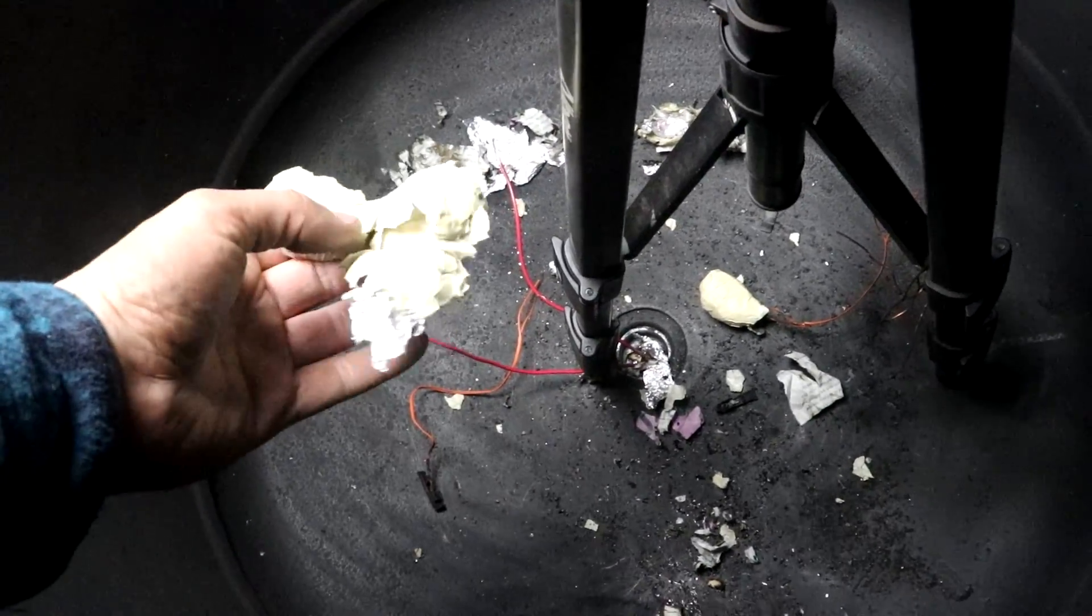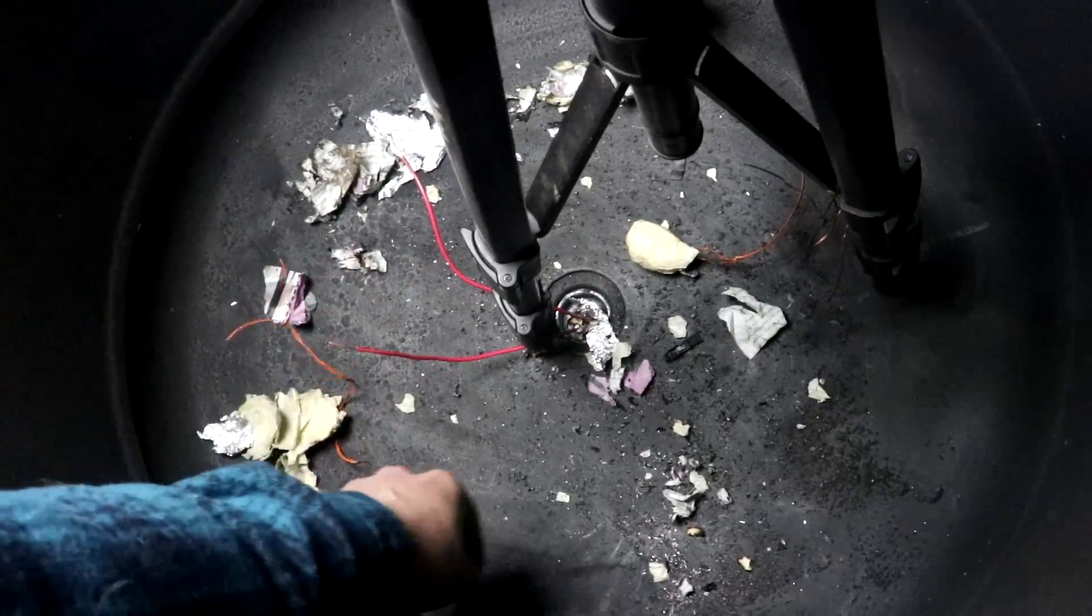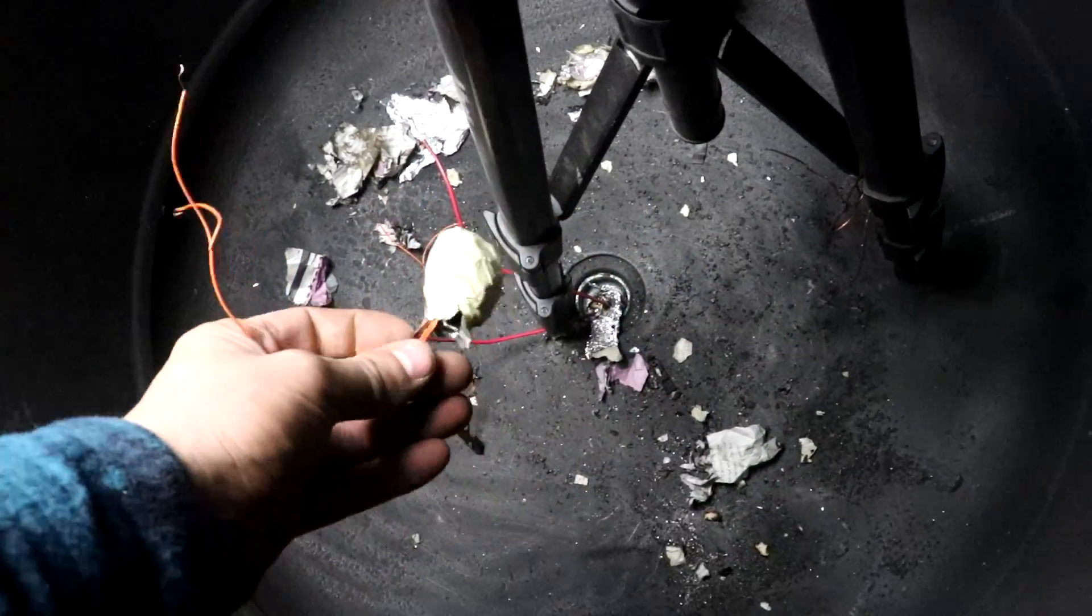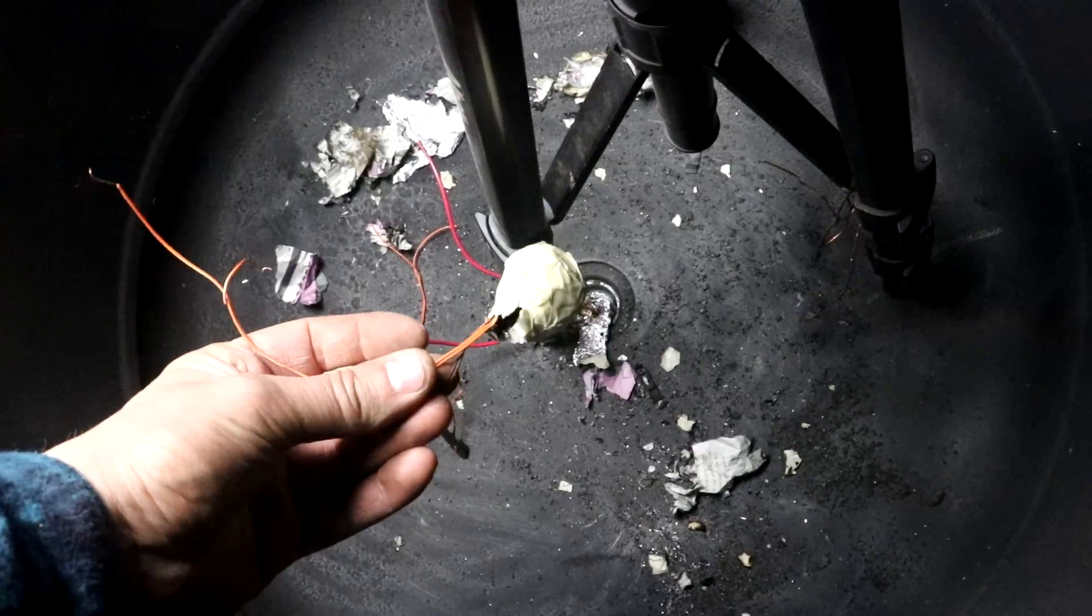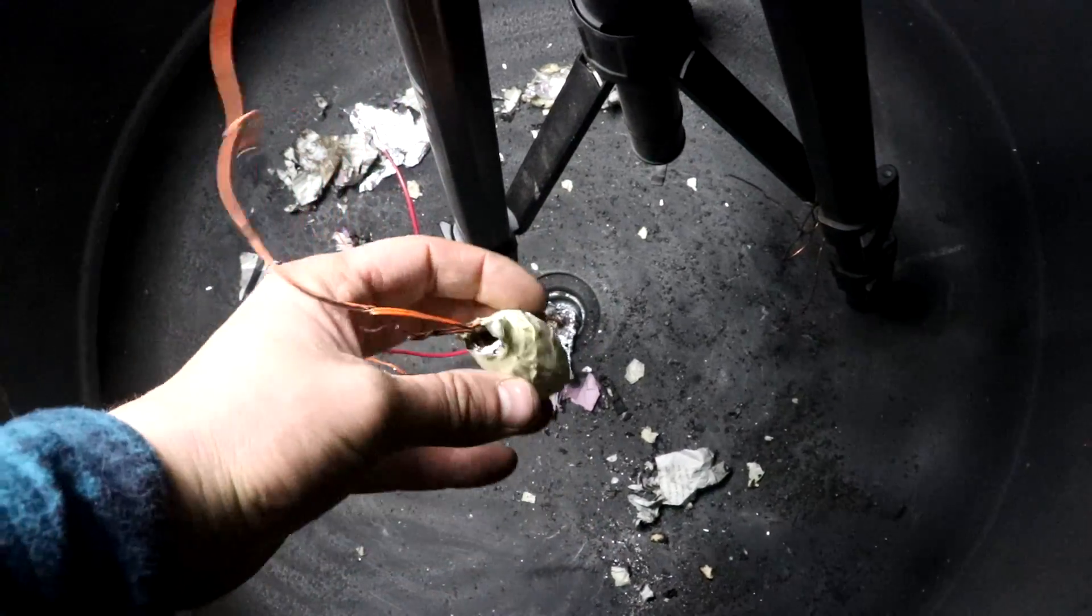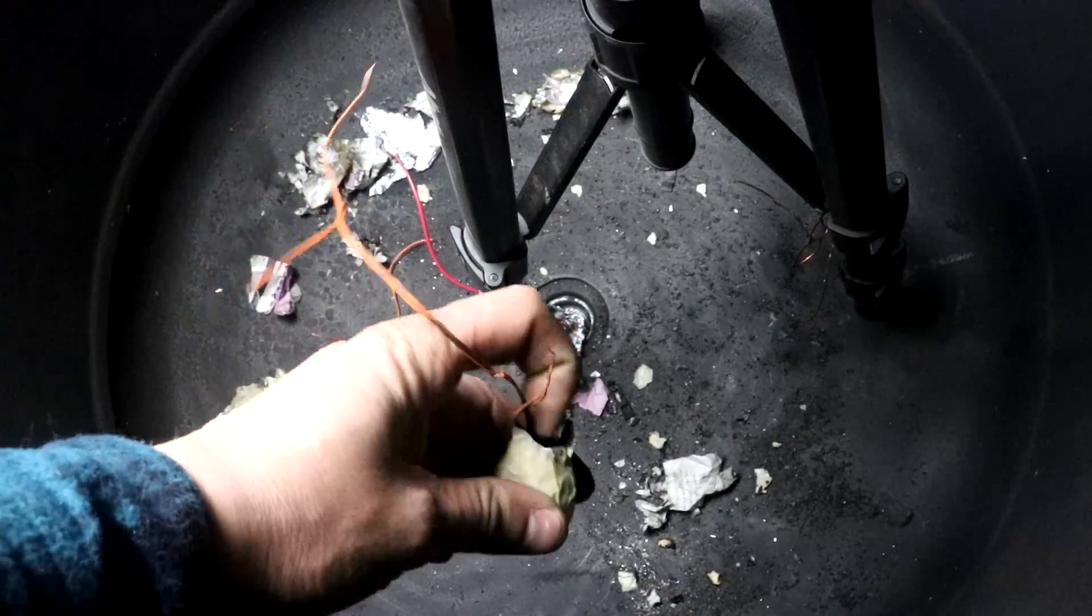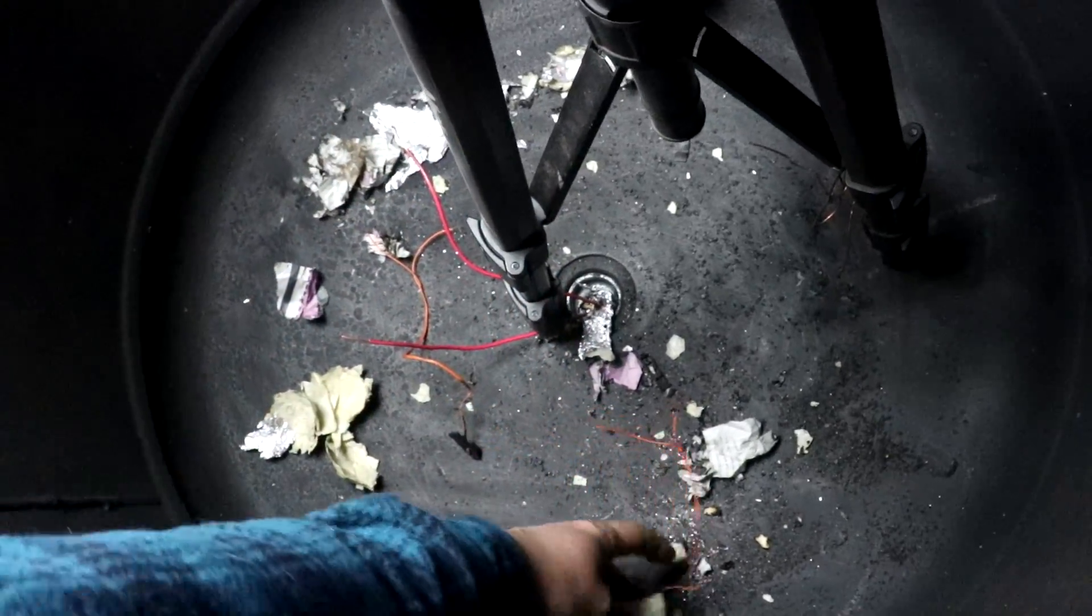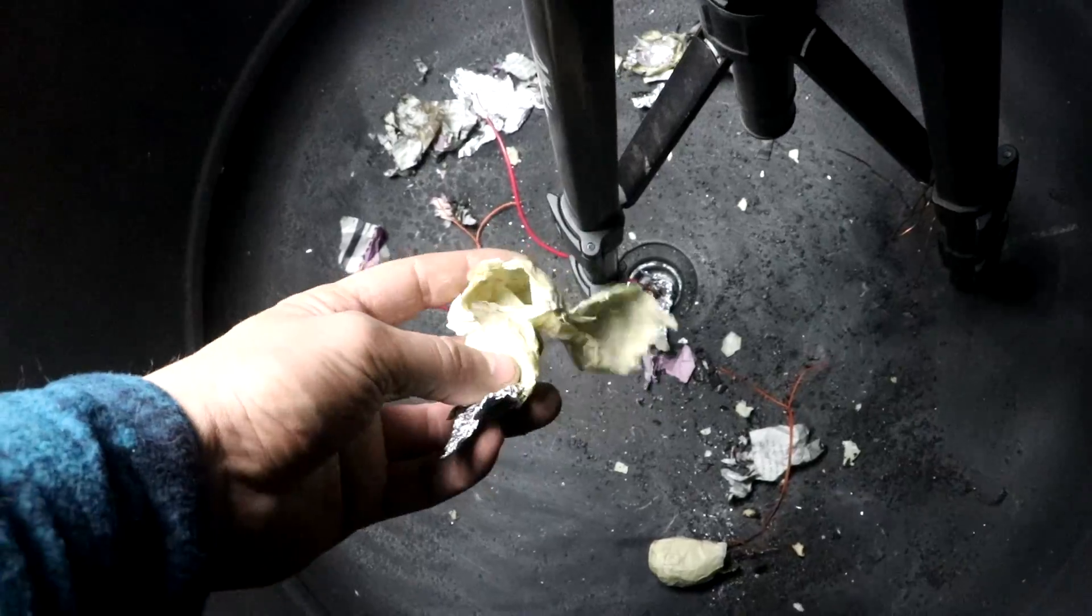So here's the shell that exploded in the vacuum and here's the shell that was set off in atmospheric pressure. Now you'll notice something I find quite interesting is this shell is more or less intact. Everything just kind of blew out here. There's the one in the vacuum that was completely destroyed.